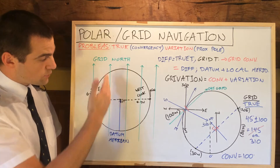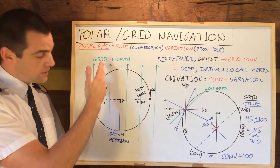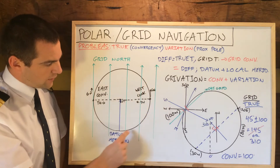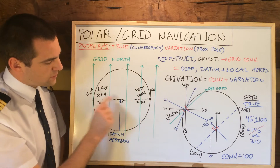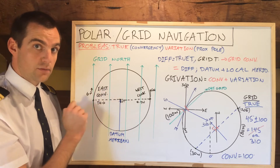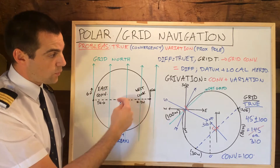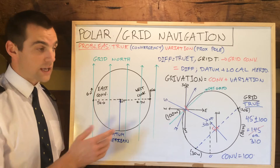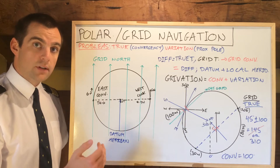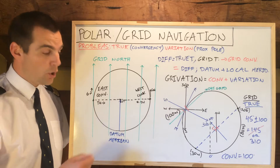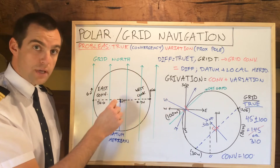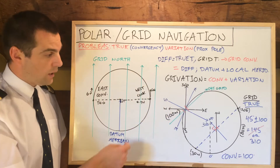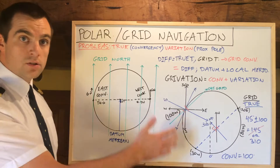Convergency can be east or west. If true north is to the right of grid north, you have an easterly convergence; if true north is to the west, then we have a westerly convergence. When it comes to exam questions, I always draw a little sketch. You're always given a parallel of latitude, you draw the same drawing — north pole or south pole — draw a circle, and that circle becomes your parallel of latitude, e.g. 80 north or 75 north.